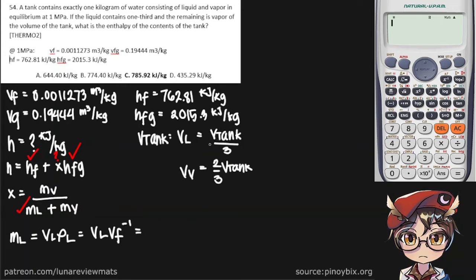And now we can simply start putting our values in. So the volume of the liquid is a third of the volume of the tank, multiplied by the reciprocal of V sub f.